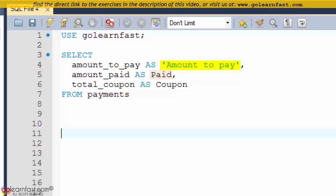Paid for the amount paid column and coupon for the total coupon column. To include a space in the alias for the first column, this statement encloses that alias in single quotes.